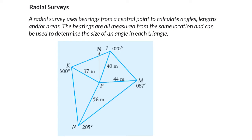We're having a look at radial surveys here. A radial survey uses bearings from a central point to calculate angles, lengths, and or areas. So we've got a central point here as it should be sitting in the middle and we measure everything from there.